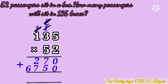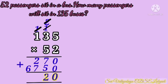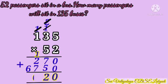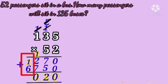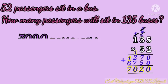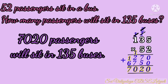Now we will add. In the ones place: 0. Next, 7 plus 5 is 12 — write 2 and carry 1 to the next digit. In the hundreds place: 1 plus 2 is 3, and 3 plus 7 is 10 — write 0 and carry 1. Now 1 plus 6 is 7 — write 7. We get 7020. Therefore, 7020 passengers will sit in 135 buses.